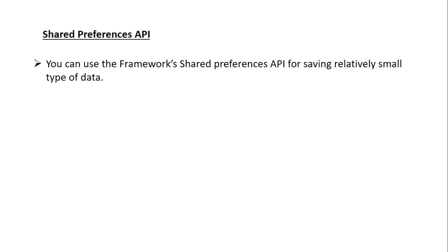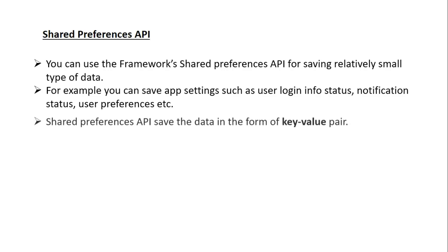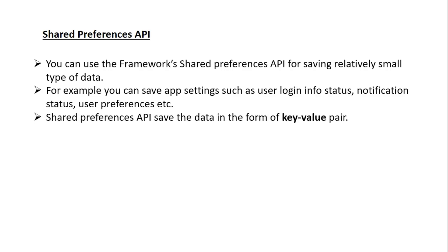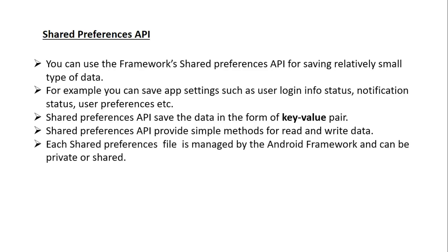You can use the framework SharedPreferences API for saving relatively small types of data. For example, you can save app settings such as user login status, notification status, user preferences, etc. The SharedPreferences API saves data in the form of key-value pairs and provides simple methods for reading and writing data. Each SharedPreferences file is managed by the Android framework and can be private or shared.